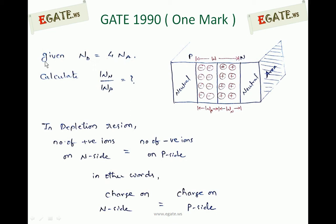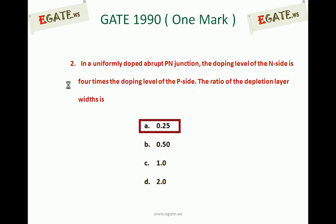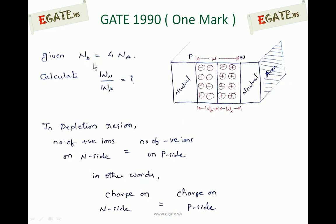Given: the doping concentration on the N side is 4 times more than the P side. The doping level on the N side is treated as donor concentration, denoted ND, and the P side is treated as acceptor concentration, denoted NA. So ND = 4NA. We need to calculate the ratio of the width on the N side to the P side, that is WN/WP.